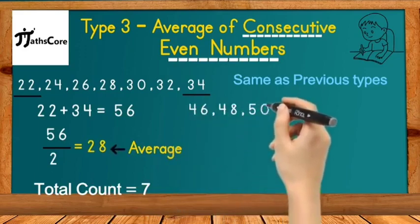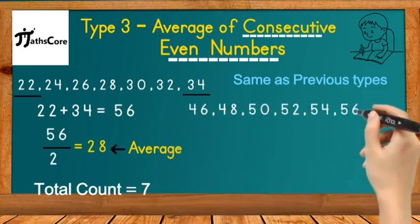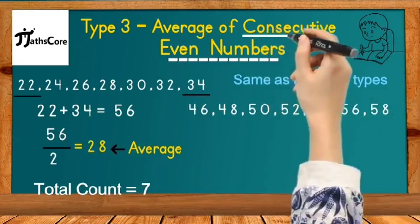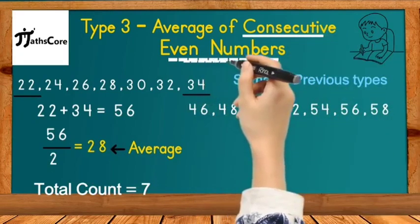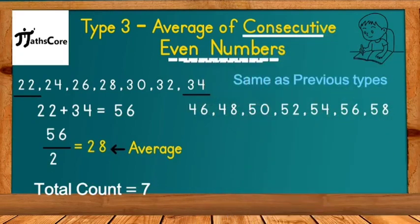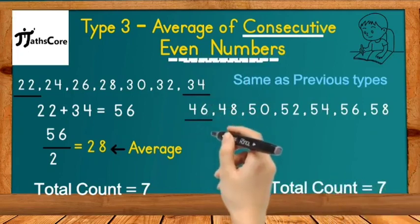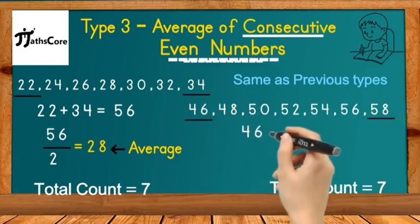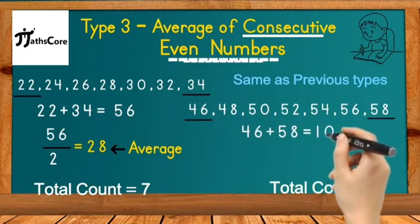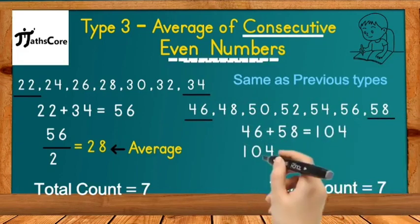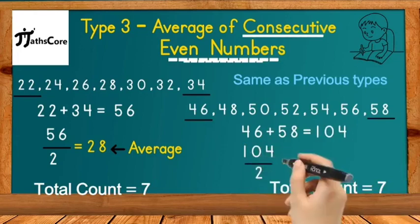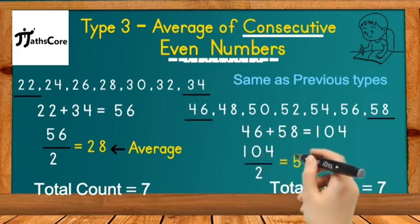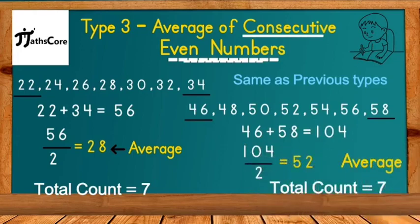Second example is 46, 48, 50, 52, 54, 56, 58. In this example all numbers are consecutive even numbers and exactly 7 numbers are given. So add first and last number together: 46 plus 58 is equal to 104, and 104 divided by 2 is equal to 52, which is the average of all these consecutive even numbers.